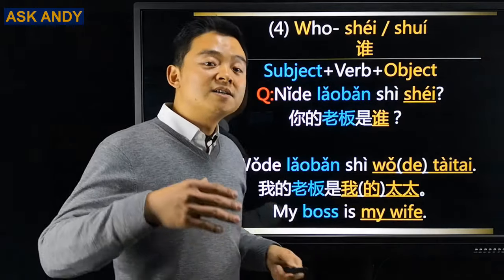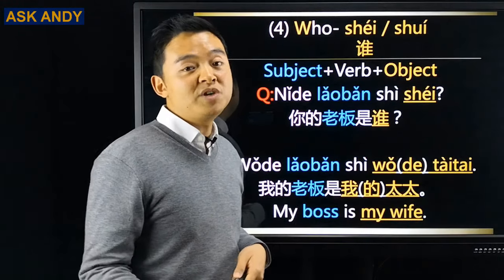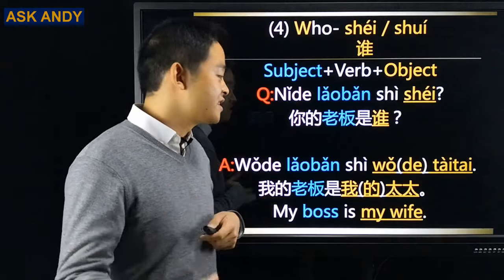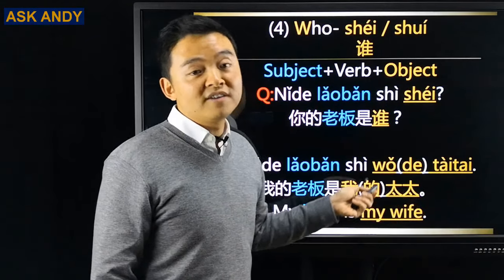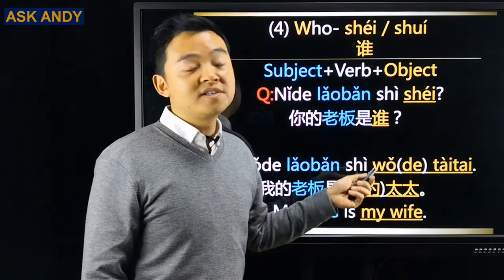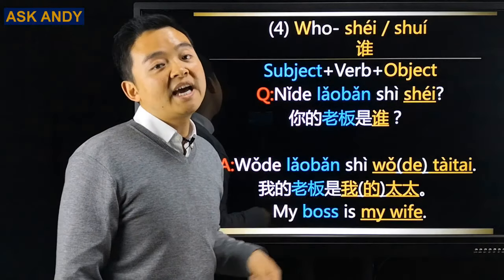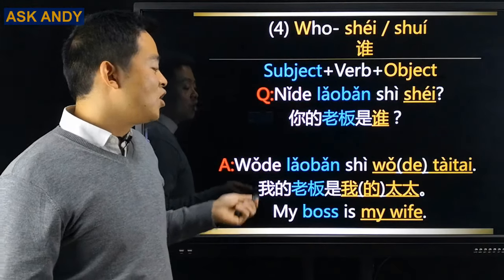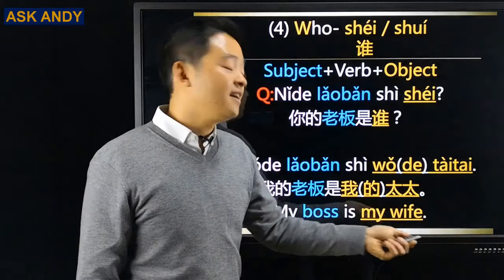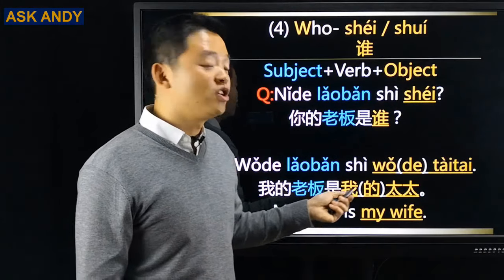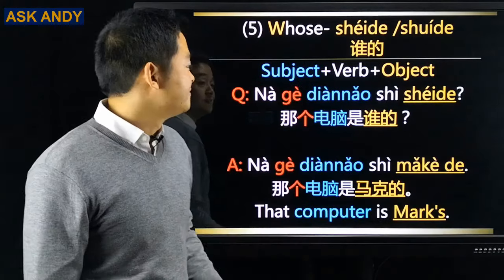As a beginner, keep 的 when speaking. For listening, understand that between family members you may not hear it — so you may hear 我太太 instead of 我的太太. The answer could be 我的老板是我太太.